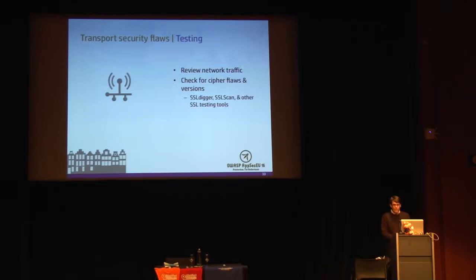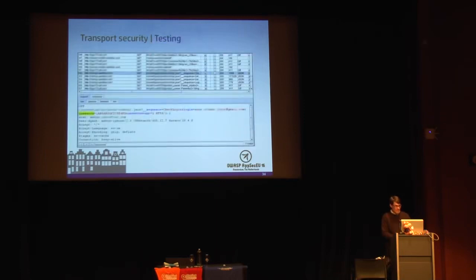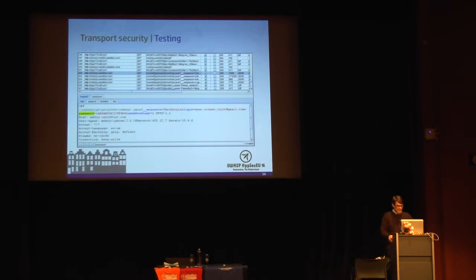When testing mobile applications, web services, and various APIs, review the network traffic — pay particular attention to any sensitive information passing in clear text. There are tools for checking cipher flaws, such as SSL Digger and SSL Scan, and a number of OWASP resources for transport level security. Here's a sample from an app I looked at just last week: a mobile application doing a GET request for a login, sending the user ID and password right there in the parameter string over plain HTTP — easily sniffed by a bad actor if the user is on an insecure network.